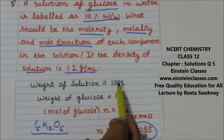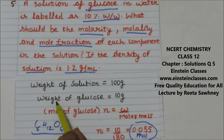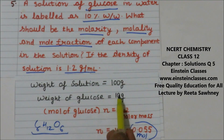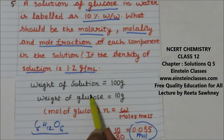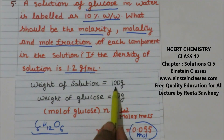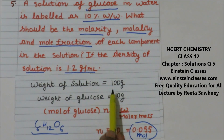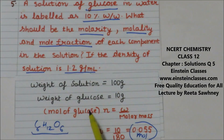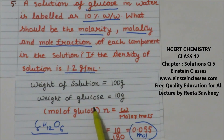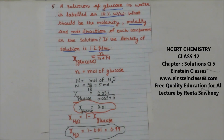If the weight of solution is 100 gram and weight of glucose is 10 gram, then the weight of the solvent water is 90 gram. We subtract the weight of glucose from the weight of solution to find the weight of solvent, which is 90 gram.